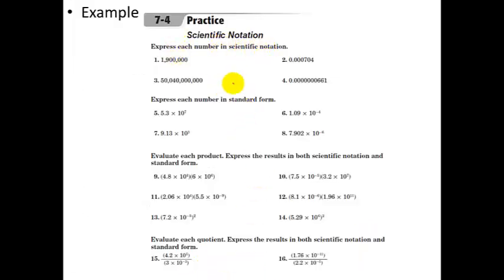Express each number in scientific notation. So let's start here. We're going to go 1, 2, 3, 4, 5, 6. We move the decimal place 6 times, so it's 1.9 times 10 to the 6th. And if you accidentally messed up and you put a negative 6 here, you should immediately catch yourself and say, wait, this is a really big number, so I need to have a positive exponent.